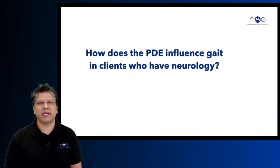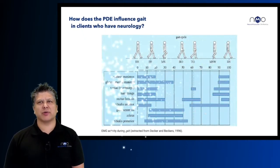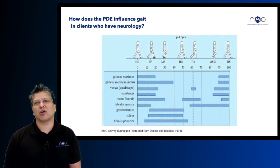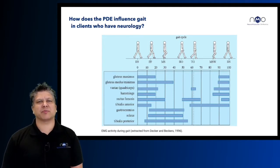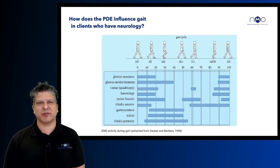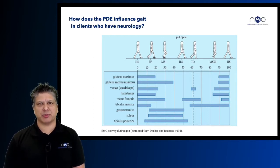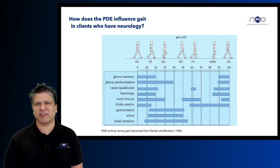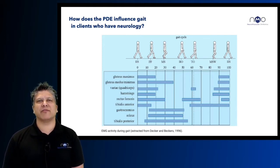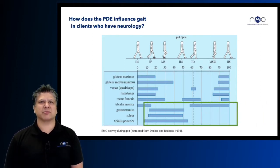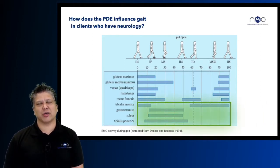When a client lands at initial contact, the external ground reaction force passes posterior to the ankle, posterior to the knee, and anterior to the hip joint. Tibialis anterior controls the rate of plantar flexion in loading response, the quadriceps control the rate of knee flexion in loading response, and gluteus maximus controls the rate of hip flexion in loading response.